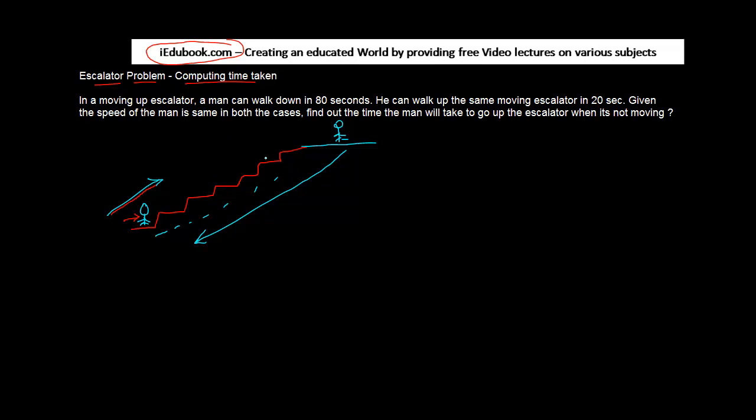In a moving up escalator, the escalator is moving up, but the man is walking down—he's coming from top to bottom—and it takes 80 seconds to do this.